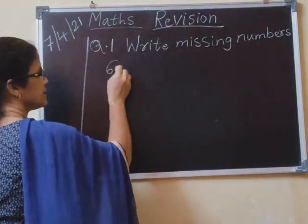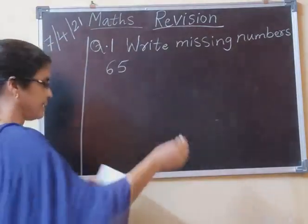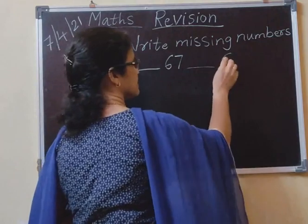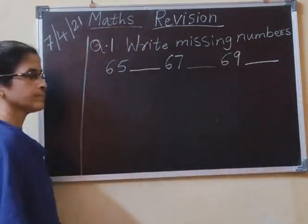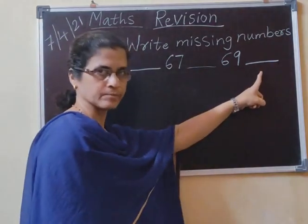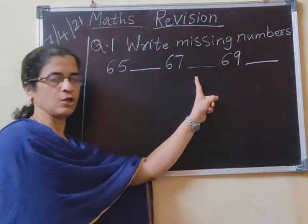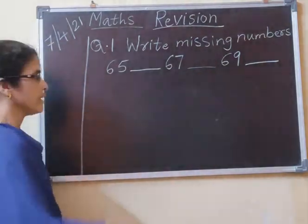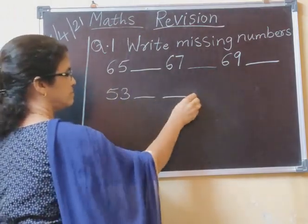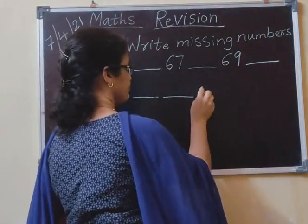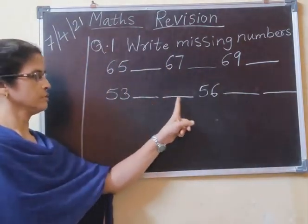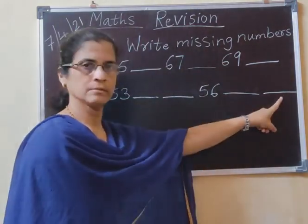Sixty-five, dash, sixty-seven, dash, sixty-nine. Sixty-five, dash, sixty-seven, dash, sixty-nine, dash. Leave one box, draw a line. Do not leave one box. Like here, leave a line and next. 53, dash, 56, dash. 53 dash, dash 56 dash.